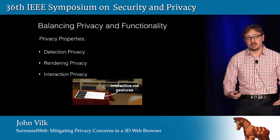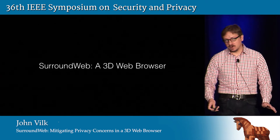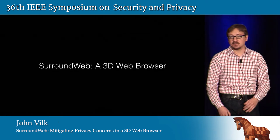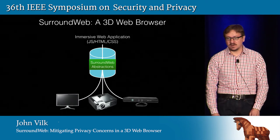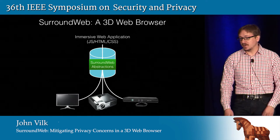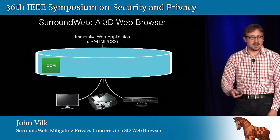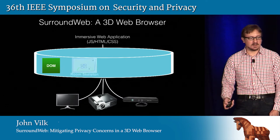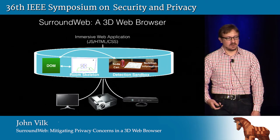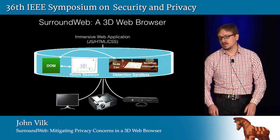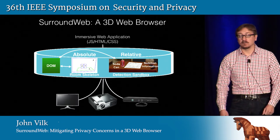So given these properties and the information learned through the surveys, we designed SurroundWeb, a privacy-preserving 3D web browser and the abstractions it encapsulates. SurroundWeb adds new rendering abstractions to the browser that make immersive web pages possible while mitigating some privacy concerns. The abstractions sit between the sensors and the display devices and the application itself. SurroundWeb augments the DOM with a room skeleton and an object detection sandbox. Like CSS, these abstractions control where and how DOM content is displayed, except in SurroundWeb they determine room placement.